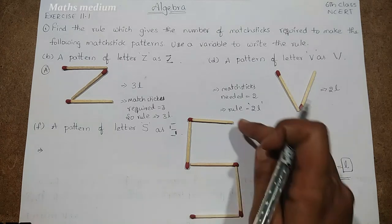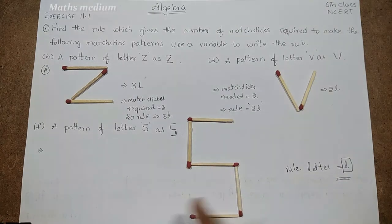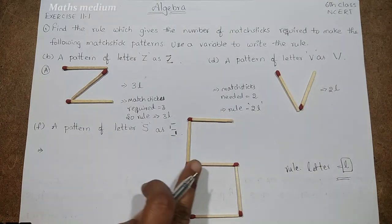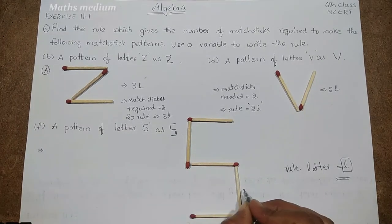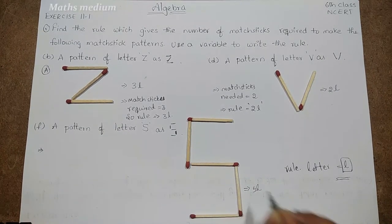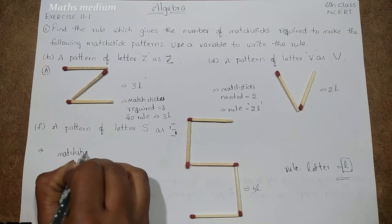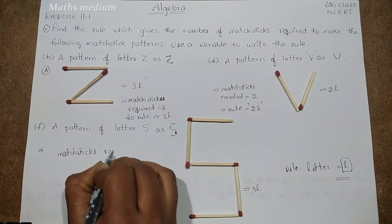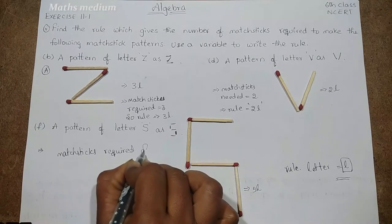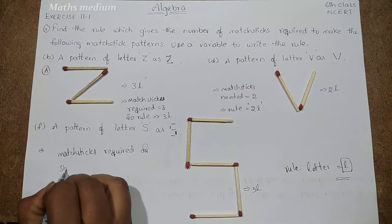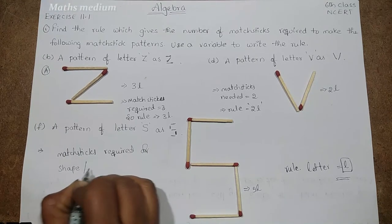Like S. So this is pattern of S, and 1, 2, 3, 4, 5 matchsticks needed. So this is 5L and matchsticks required for shape or letter.